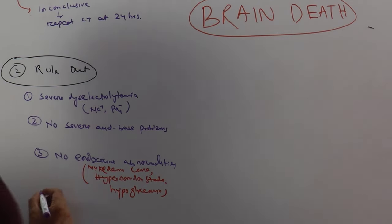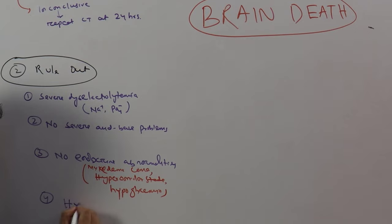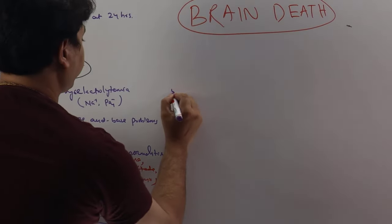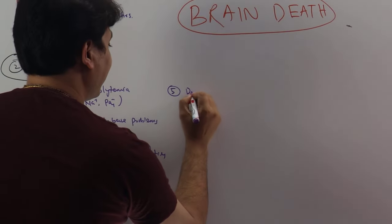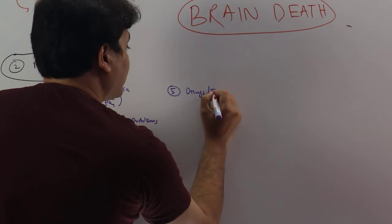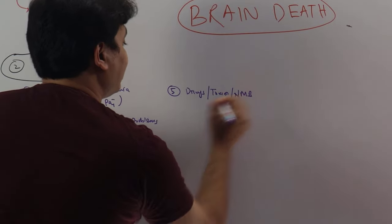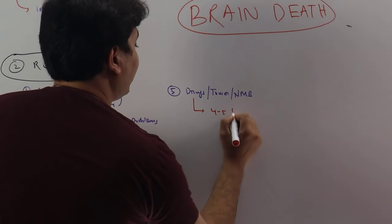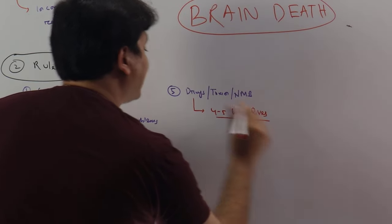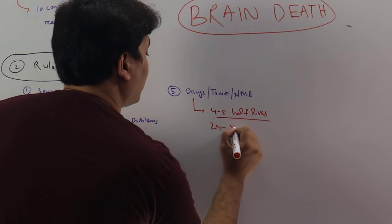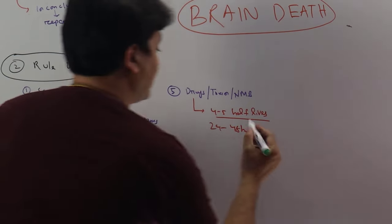Number four, there should not be hypotension. Systolic blood pressure should always be more than 100. Number five, whether the patient has taken some drugs. The drugs can be drugs you have given them, or the patient has taken some toxin, or you have given neuromuscular blocking agents. You have to wait for four to five half-lives. If you know the nature of the drug, or else if you do not know the nature of the drug, you may have to wait for 24 to 48 hours.